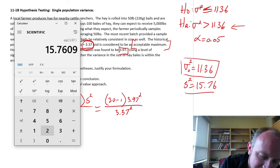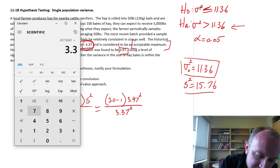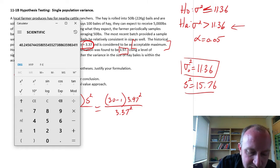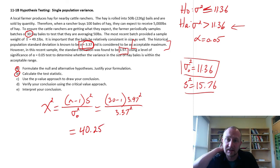So 30 minus 1, this would be 29, times 3.97 squared, divided by 3.37 squared, equals 40.25. There's our test statistic.